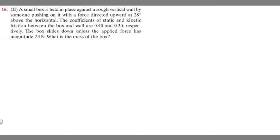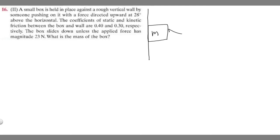The easiest way to understand this is by drawing it. So this is going to be our wall, and we know we're going to have a box being pushed against it. This right here is going to be our box, and what we're trying to find is the mass — I'm just going to label it M. We have a force of 23 newtons pushing against this, at 28 degrees to the horizontal.